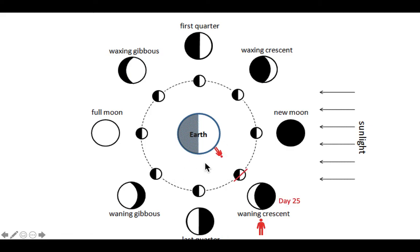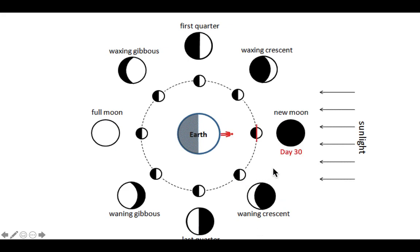Wrapping up the waning phases: the waning crescent is at about 9 a.m. in the morning — another morning moon you can see in the daytime. Bright is on the left, and just this little piece is all you can see as the waning crescent. Then we get all the way back to day 30 and we're back to the new moon.